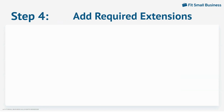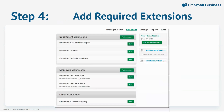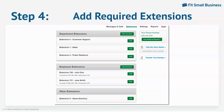Extensions determine how incoming calls are routed to different persons or departments, such as sales, billing, and customer service divisions. Grasshopper plans have three, six, or unlimited extensions depending on your subscription. Users easily configure their extension settings using Grasshopper's online portal. Choose from two types of extensions — for departments like sales and billing, and for individuals.